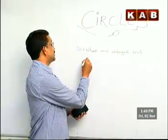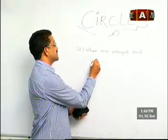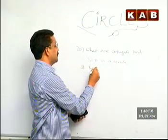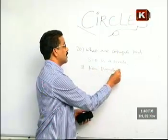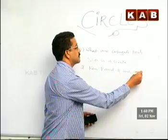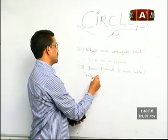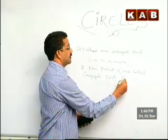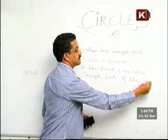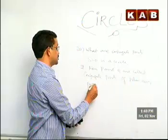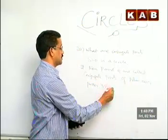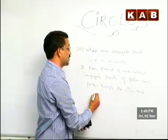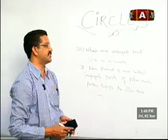Now, I will just write the definition. What are conjugate points means for a circle? If S = 0 is a circle, then P and Q are called conjugate points if polar of each passes through the other one. This is the definition.